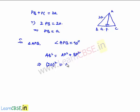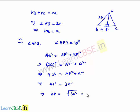4a square is equal to AP square plus a square. That implies AP square is equal to 4a square minus a square, which is nothing but 3a square. That implies AP is equal to under root of 3a square, that is equal to root 3 times a.